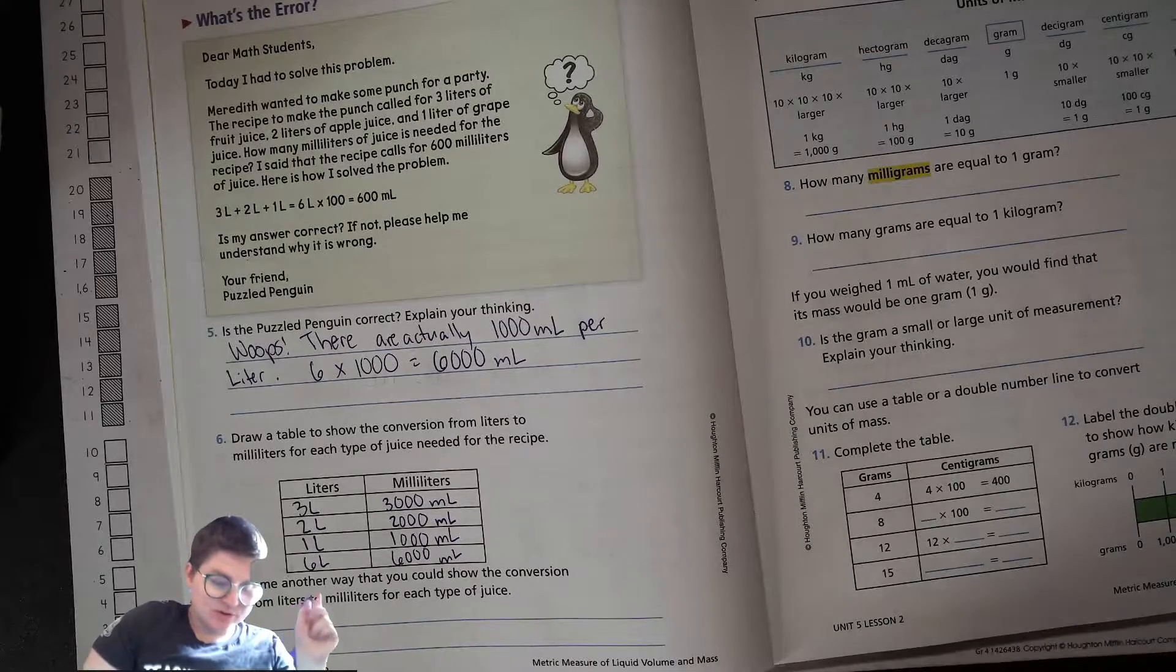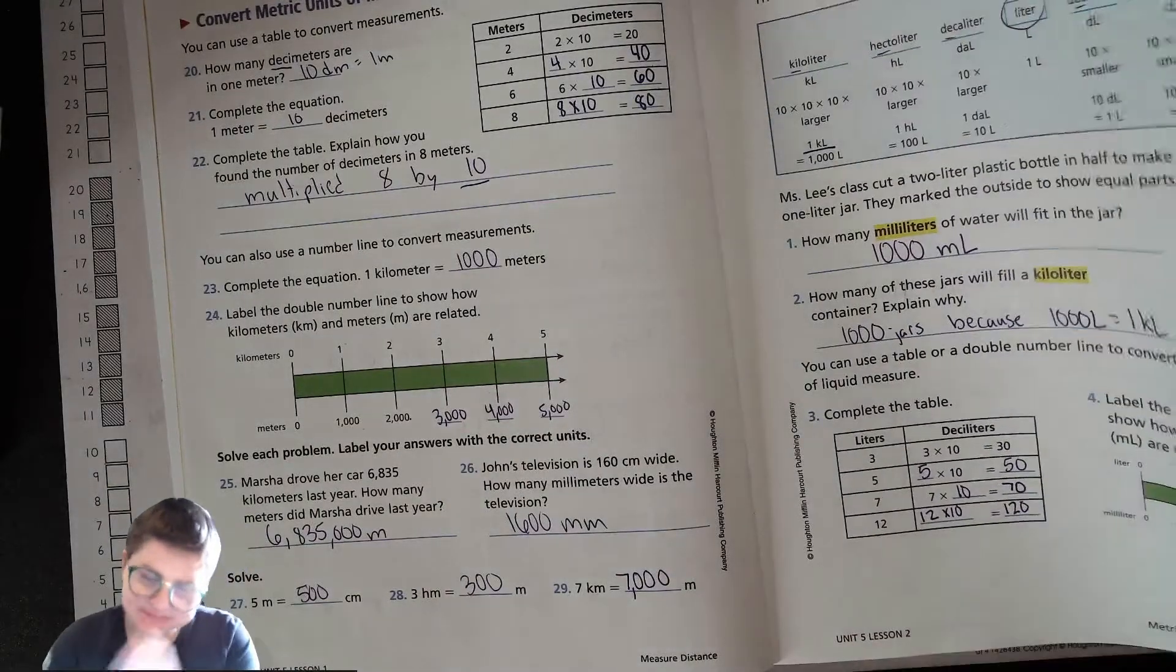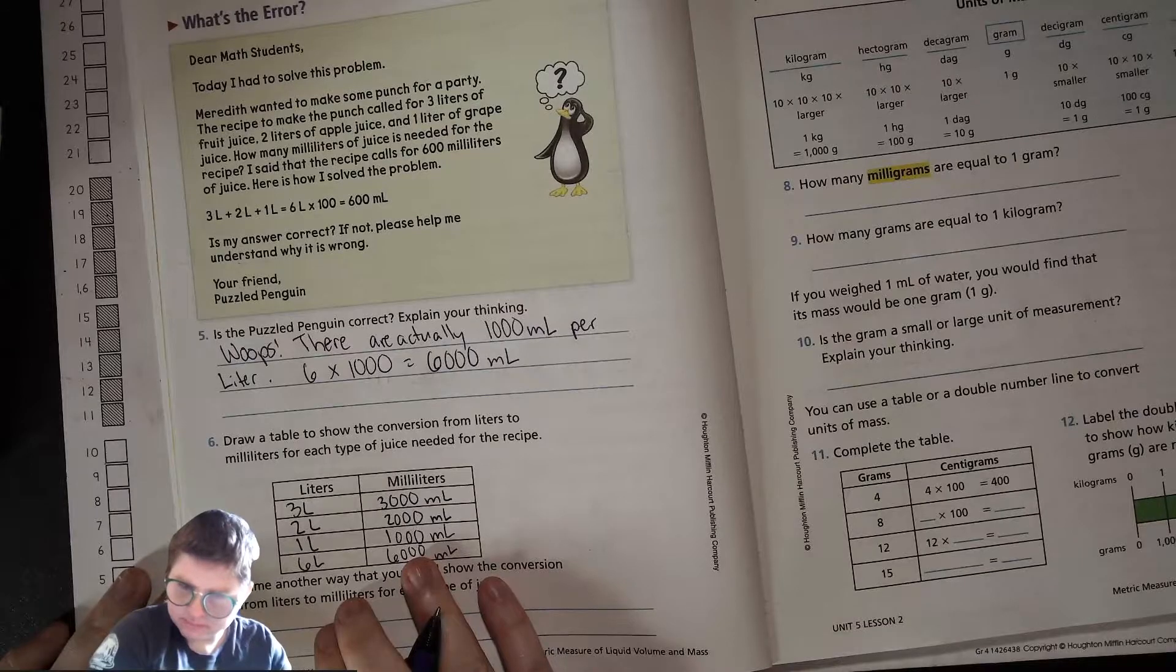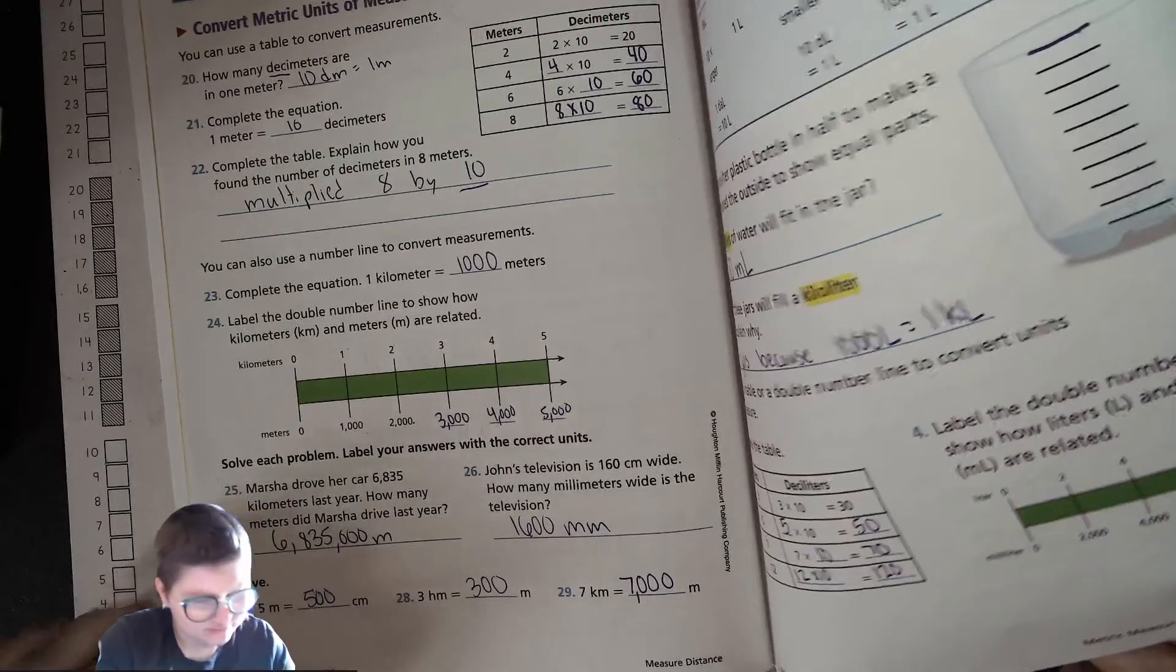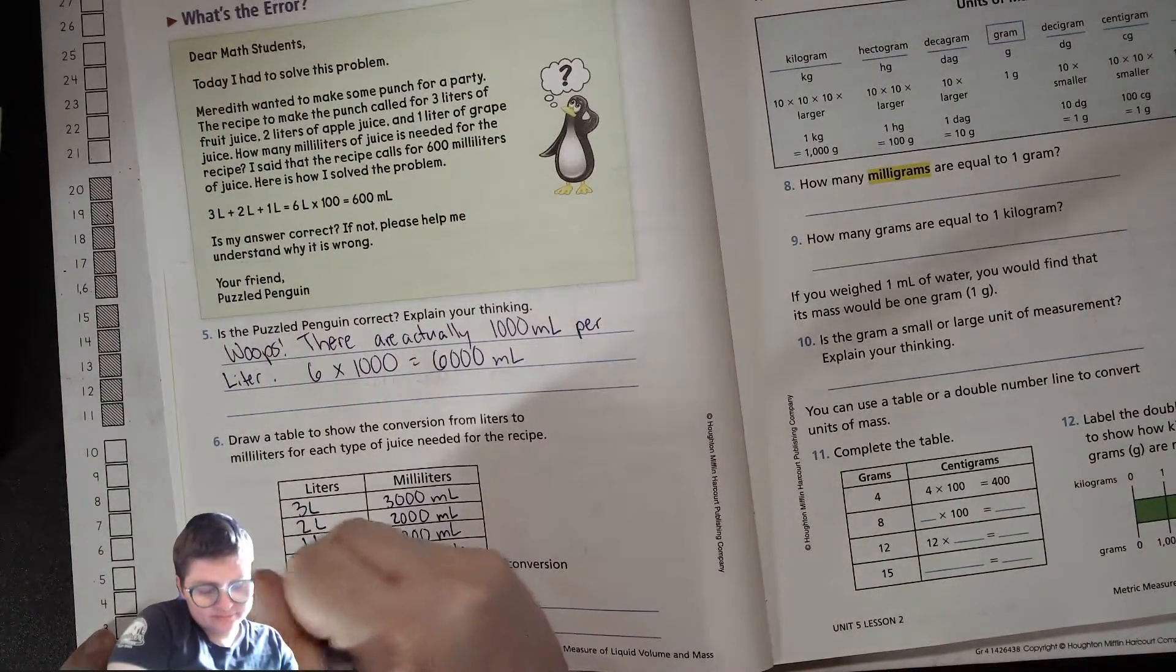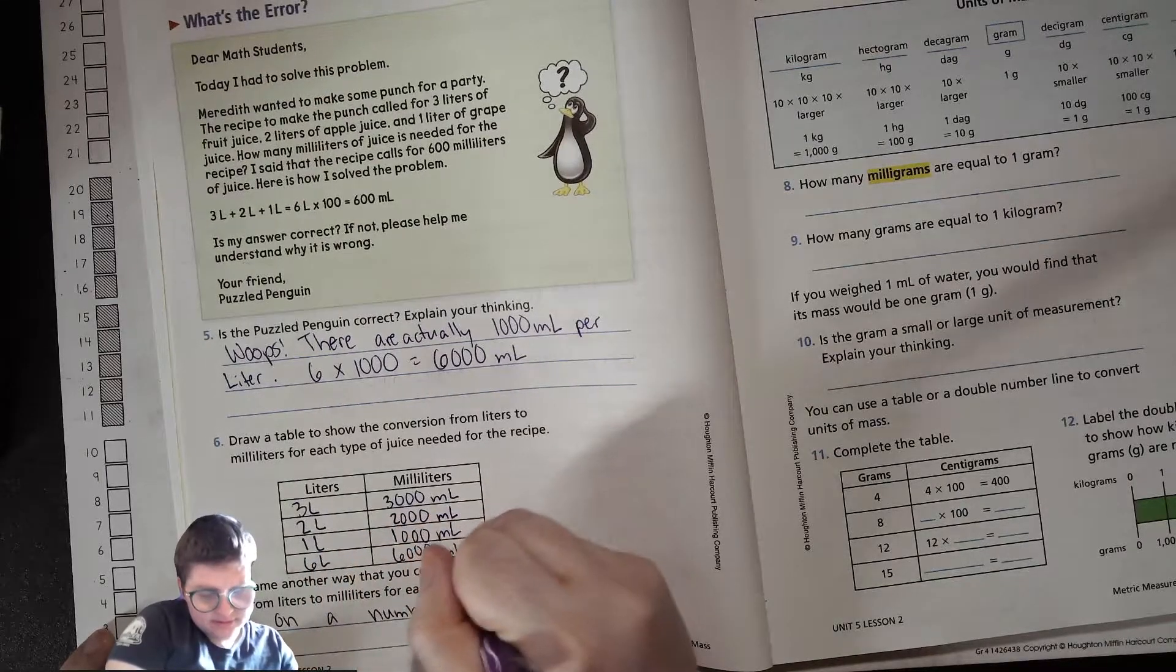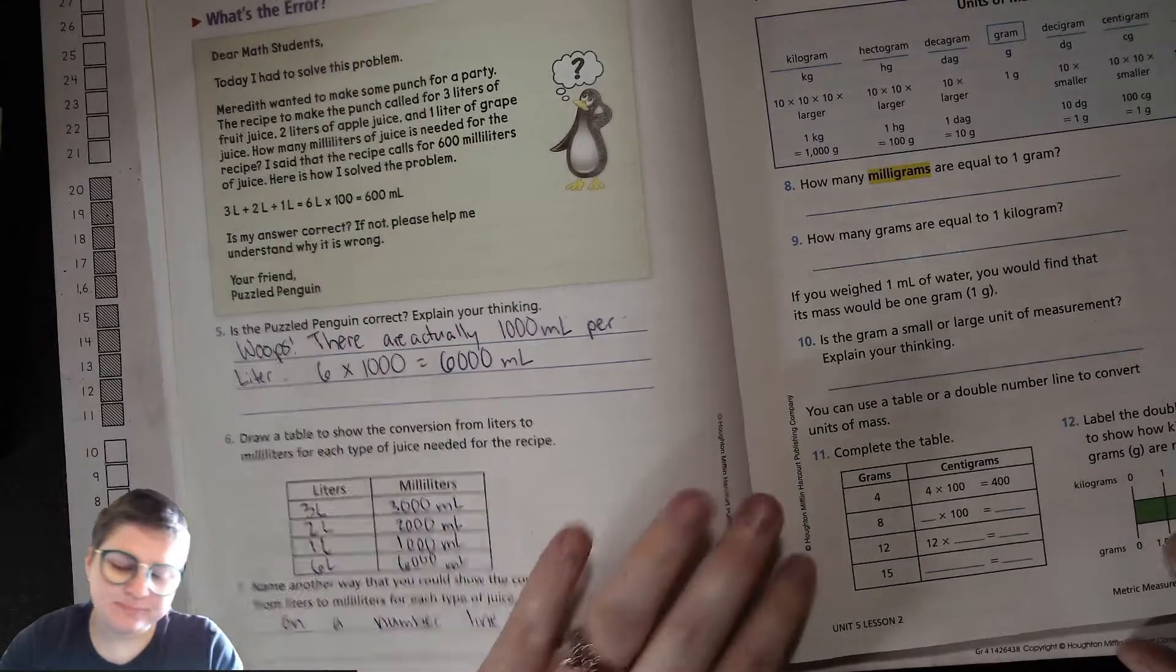Name another way you could show the conversion from liters to milliliters for each type of juice. You could use one of these little bars, right? A bar graph. What do they call them that? It's a number line, I guess. Fine.